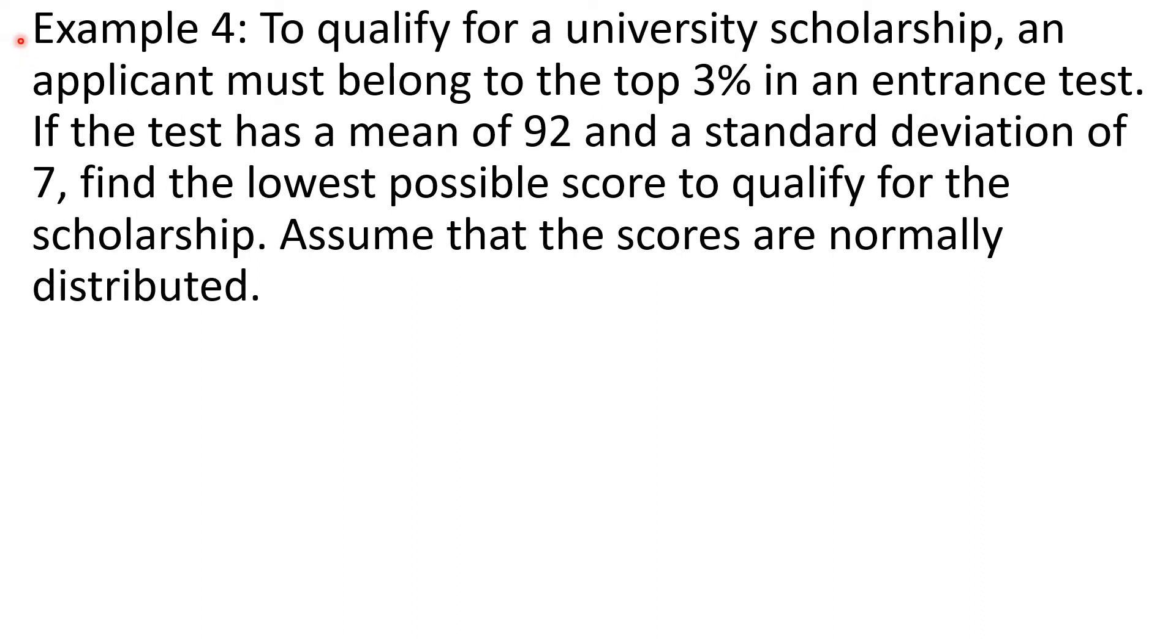Example 4. To qualify for a university scholarship, an applicant must belong to the top 3% in an entrance test. If the test has a mean of 92 and a standard deviation of 7, find the lowest possible score to qualify for the scholarship. Assume that the scores are normally distributed. First, we have to consider that top 3% means the 97th percentile. And in symbols, that is P sub 97. Now, 97% is equal to 0.97 in decimals or if we add some decimal places, it is also 0.9700 up to 4 decimal places.